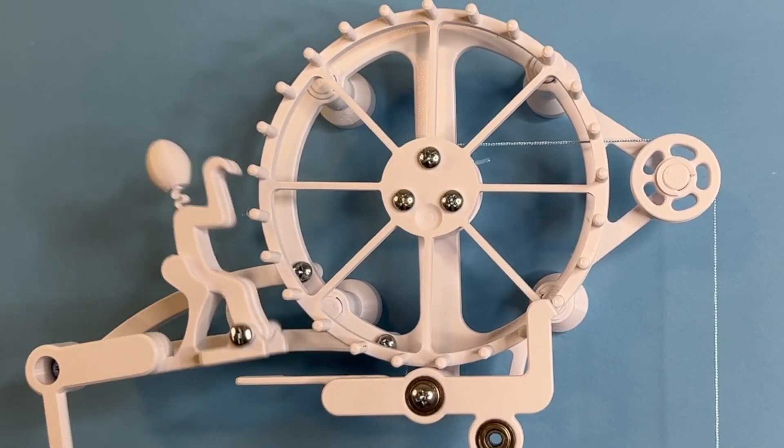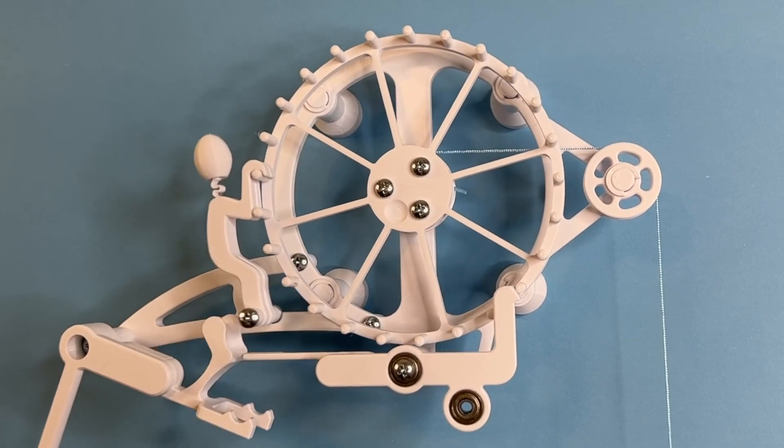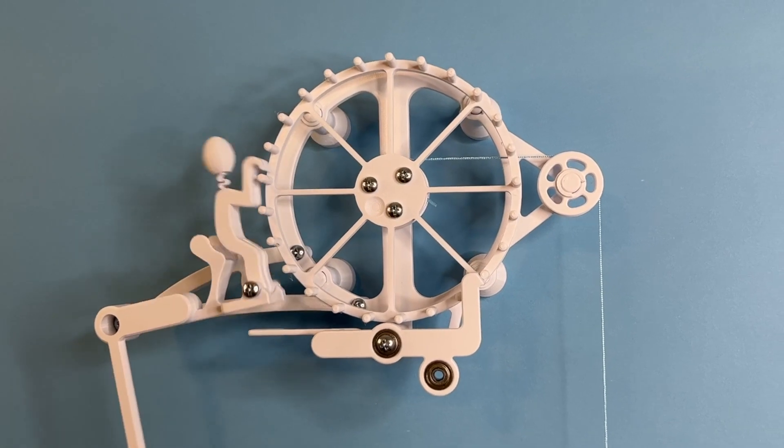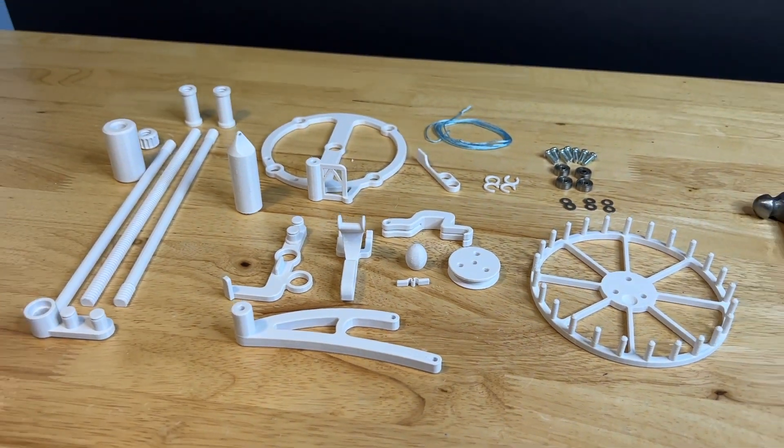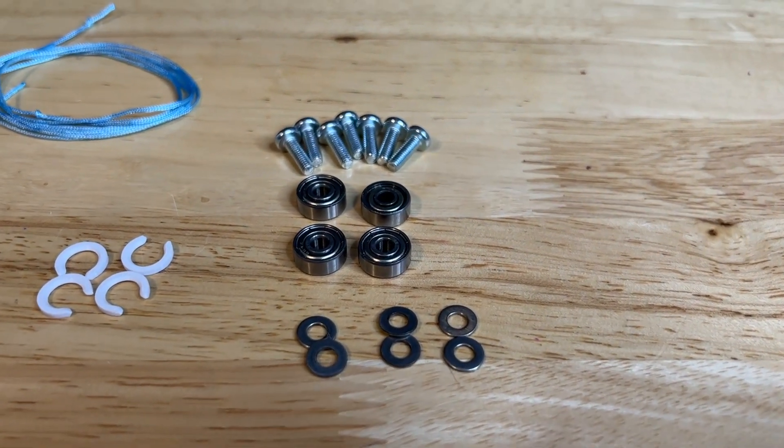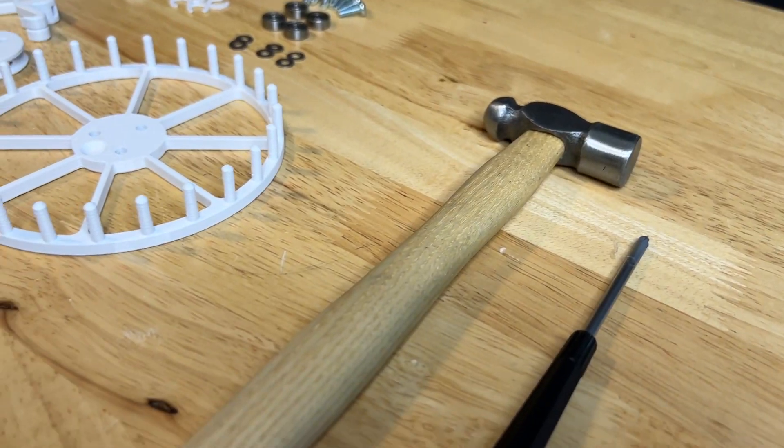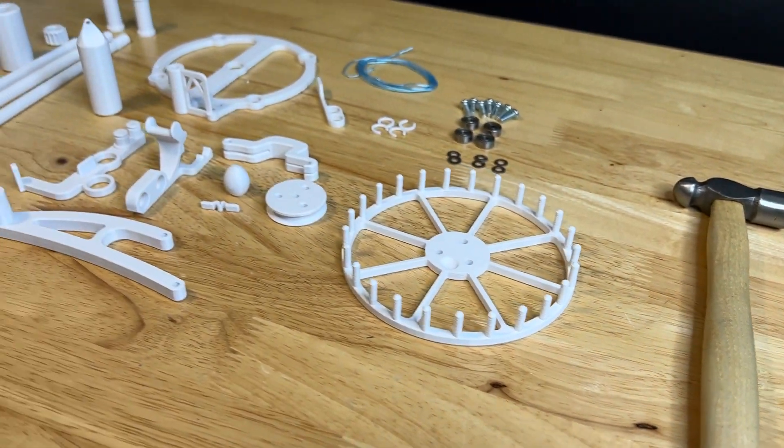In this video, I'm going to be showing you how to assemble the Walking Bob escapement. All the files can be purchased from jbvcreative.com. If you haven't yet, get those files printed. You will need some additional parts. The full parts list is included in the download package and you will need a hammer and a screwdriver to assemble this thing.